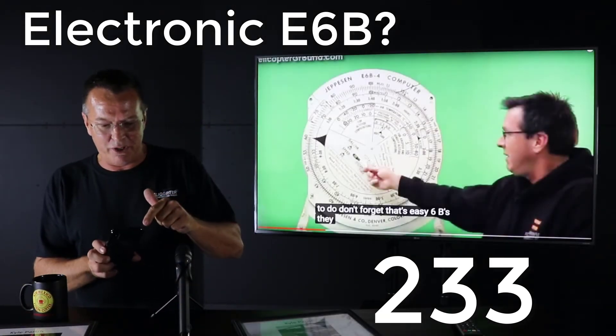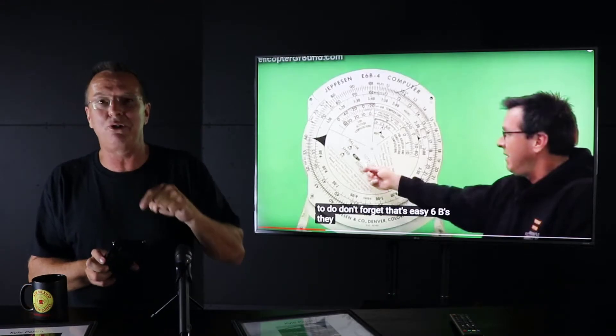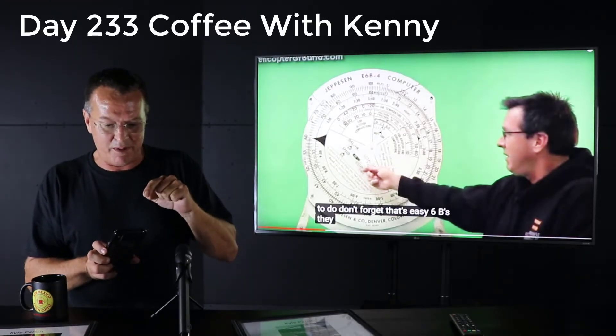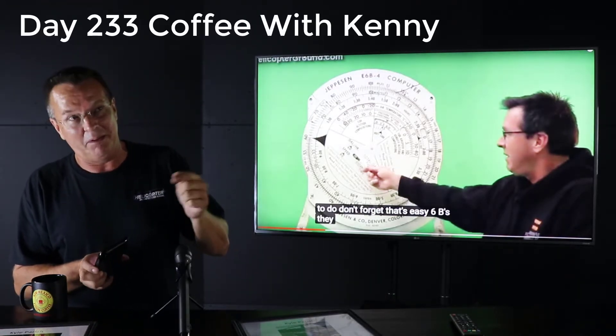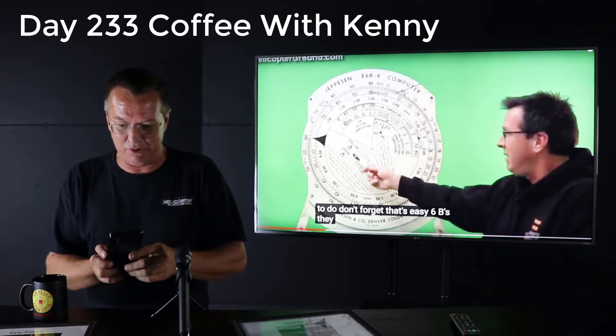It's day 233 and right now the time is 2:33. I got to take off in about three minutes to get my daughter from school, so I got to make this quick. Today's question is a simple one - it's about the e6b flight computer and I'll get to that in a minute.